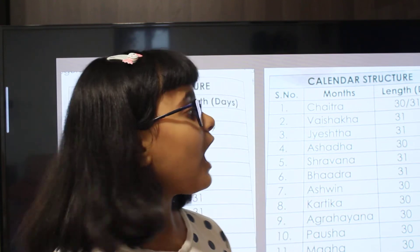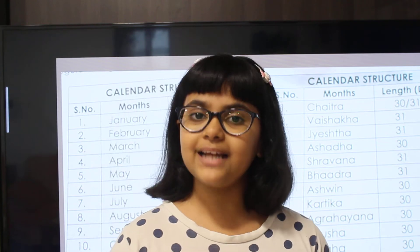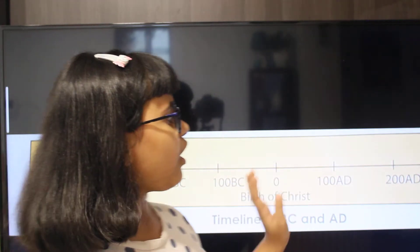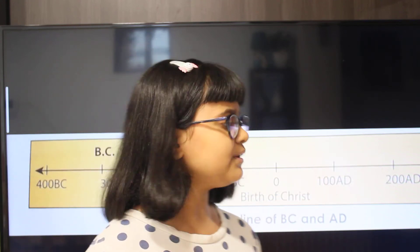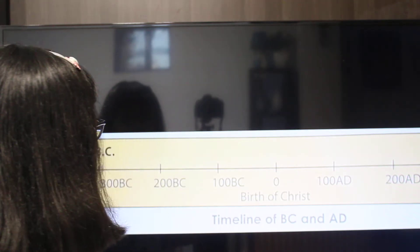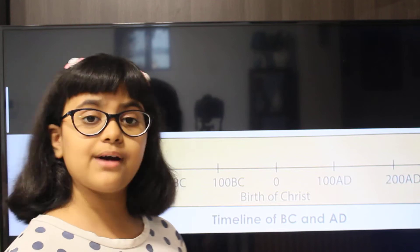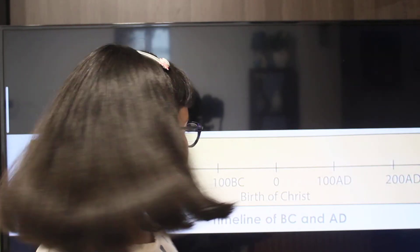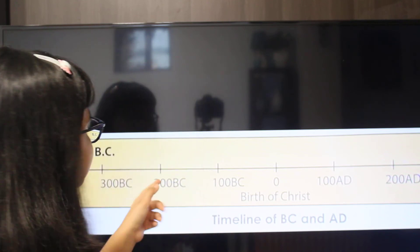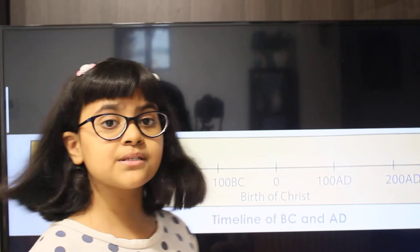Now let's go on to the timeline. In the timeline, we have BC, AD, BCE, and CE. First let's learn about BC and AD. BC stands for Before Christ — that is, before the birth of Christ. BC is counted backwards; for example, 200 BC comes before 100 BC.